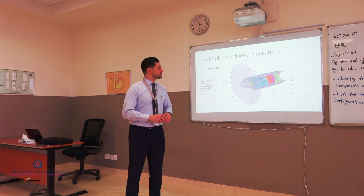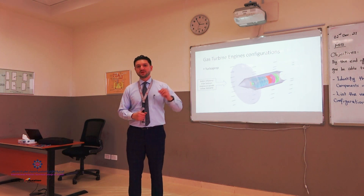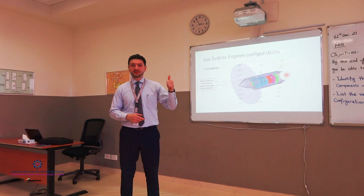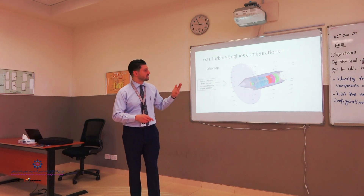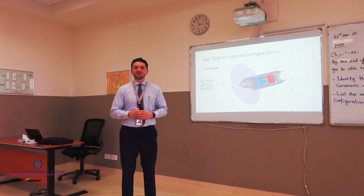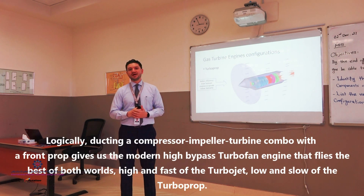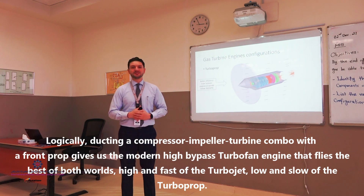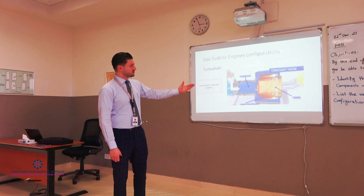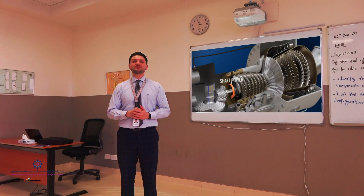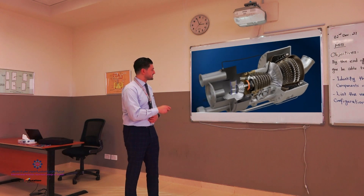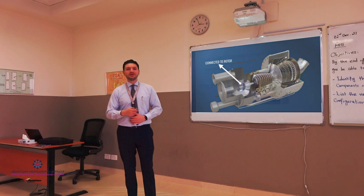The turboprop engine — the same engine we saw earlier, the PT6A — consists of a compressor, turbine, combustion section, and a propeller that provides thrust to the aircraft. Turboprop engines are usually efficient at speeds below 350 miles per hour. The turboshaft configuration uses the same type of engine installed on helicopters, where a free-rotating turbine is connected to a shaft to propel the helicopter.